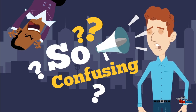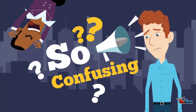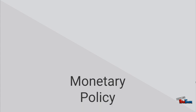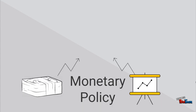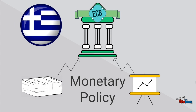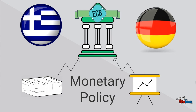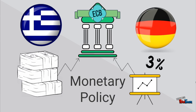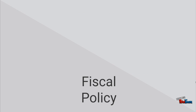But what exactly is monetary policy and how does it differ from fiscal policy? Monetary policy is in charge of money supply and the interest rates at which countries can borrow money. A unified monetary policy meant that countries such as Greece, which before was not very trustworthy to lenders, could now borrow as much money as it wanted and at the same interest rate as countries such as Germany, the biggest and strongest economy in Europe.